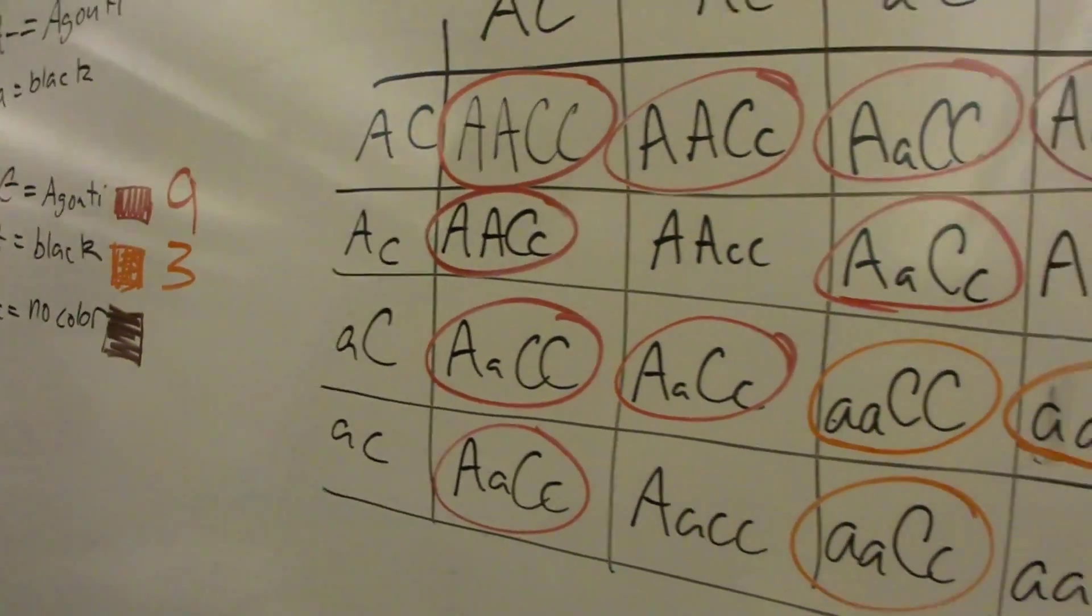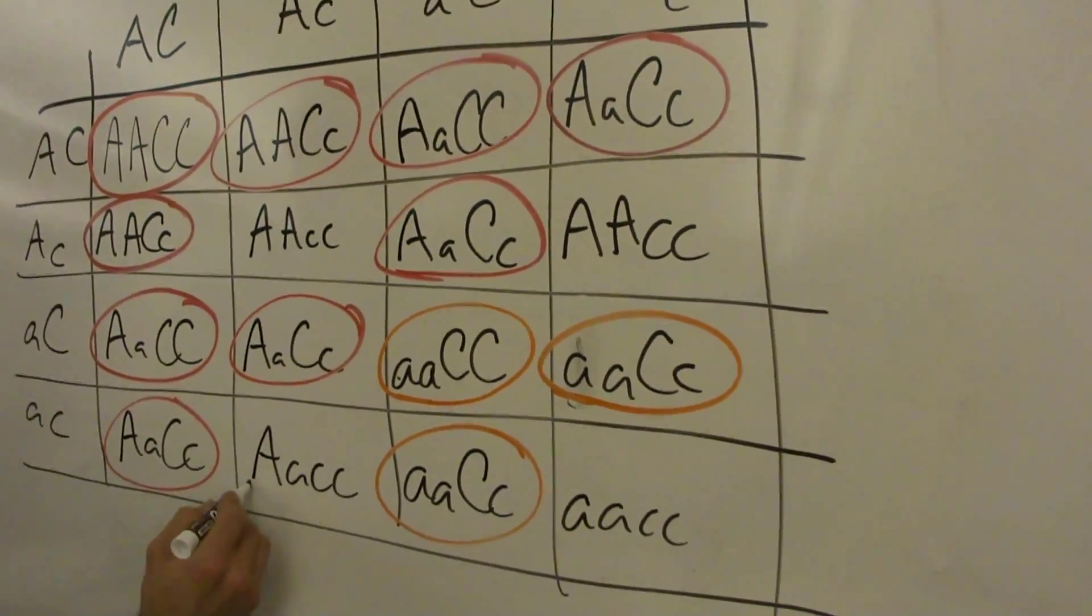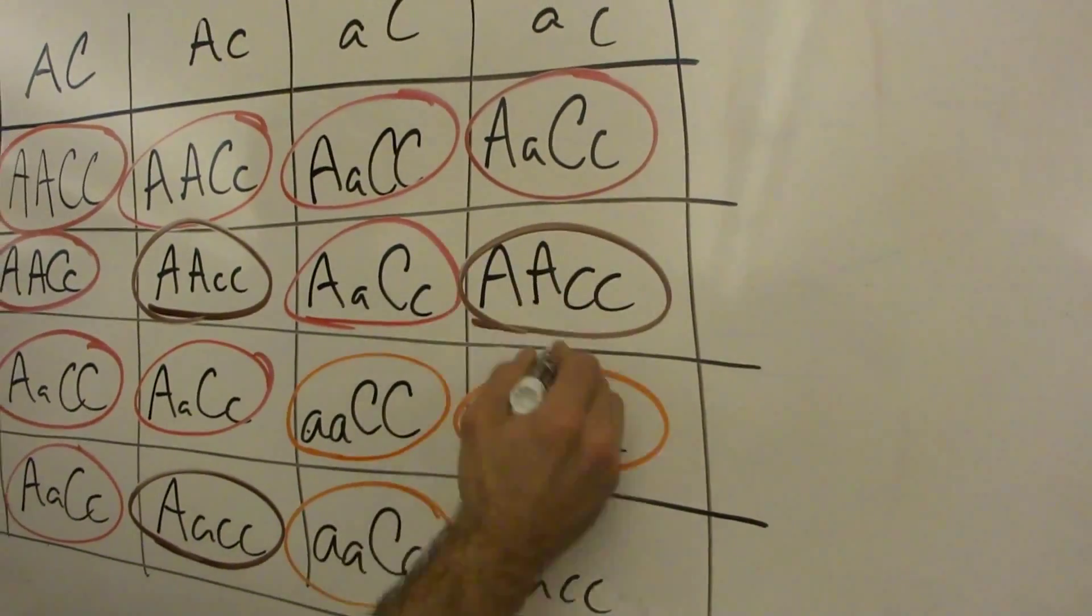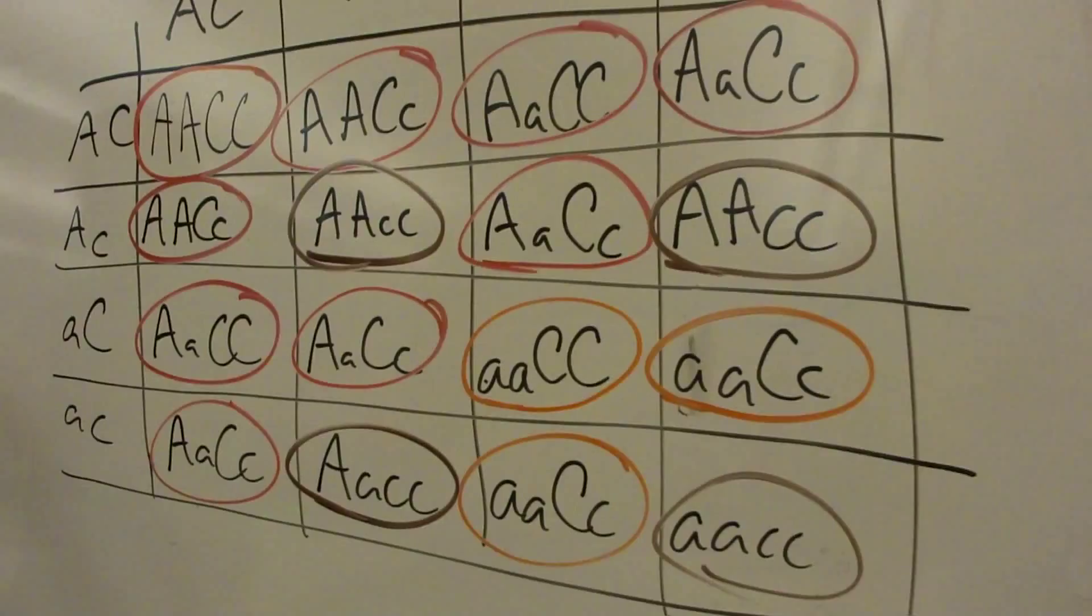So now we need all little c's, basically, because those are going to give us no color. So anything with double little c's, huh? Yep. Anything. Okay. And we get four.